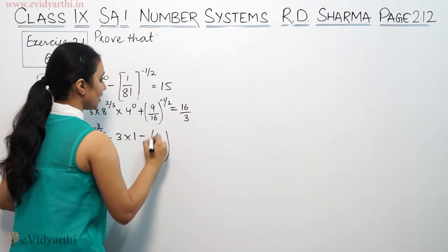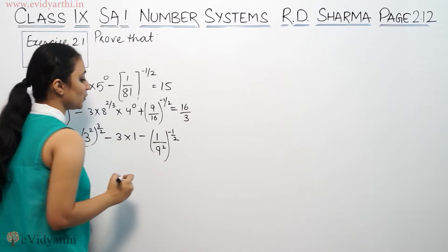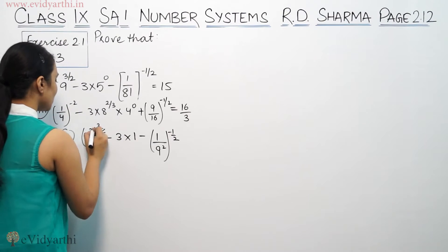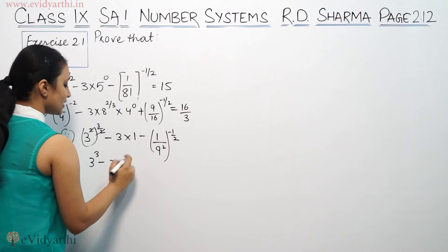Now, we have 9 square, raised to the power of minus 1/2. So, we have 2 to cancel. So, we have 3 cube, 3 times 1s are 3.